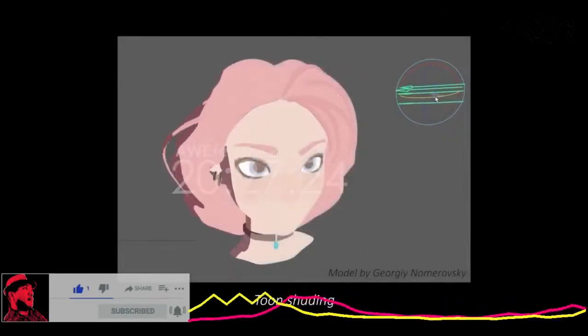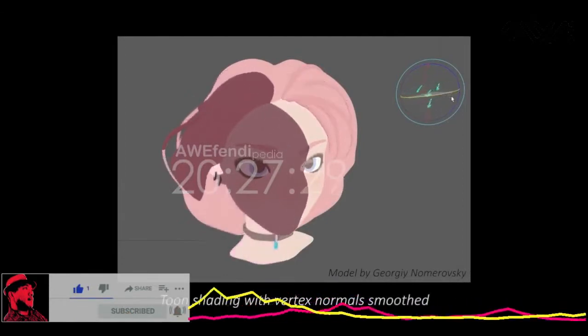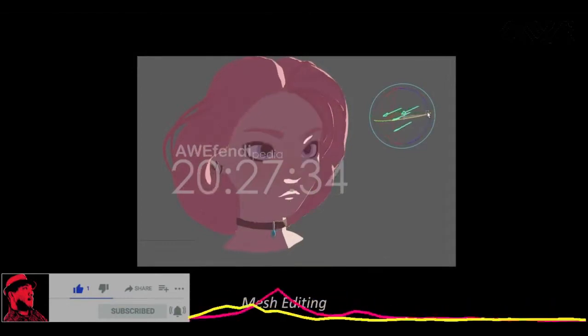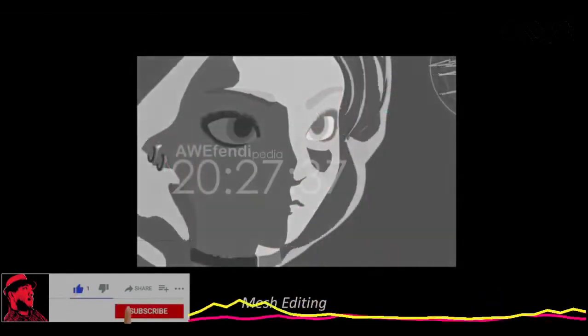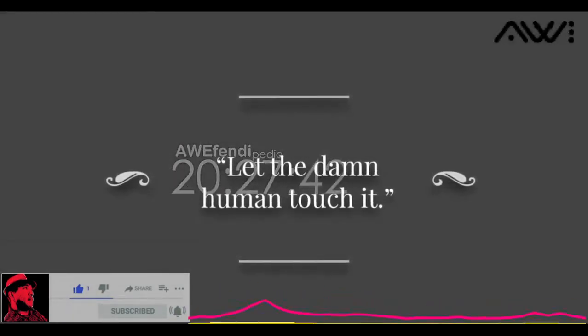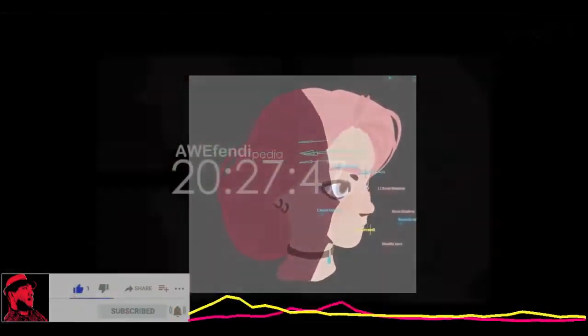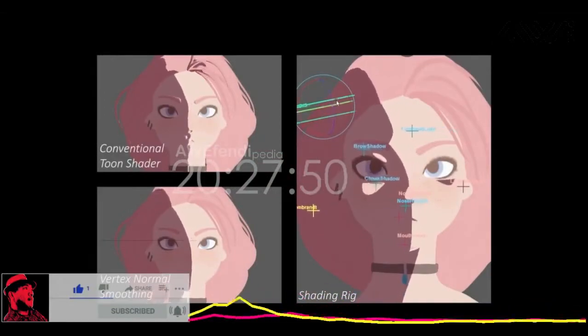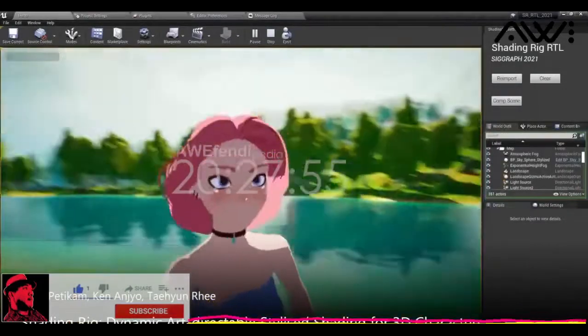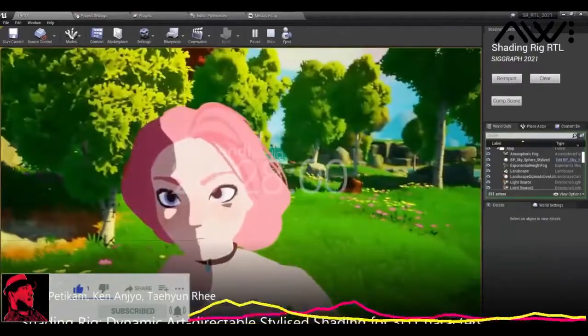Toon shading kind of sucks. It gives you these messy shadow shapes, and fixing it with normal smoothing just kills all the details. Mesh editing leaves you with static shading and flickery transitions. That's not at all how an artist would draw them by hand. Isn't there a better way to give toon shading that human touch? We propose to just let the damn human touch it. With Shading Rig, you can directly edit toon shading with our novel shading primitives. Then you can precisely define how shadows smoothly transition between light angles. Now games can dynamically correct the shading, allowing that human touch to be automatically preserved in real time. Watch our talk to see how we did it.